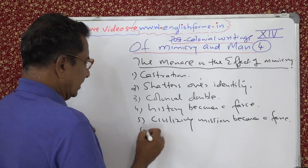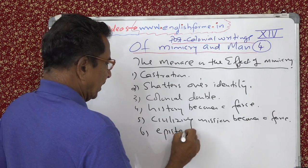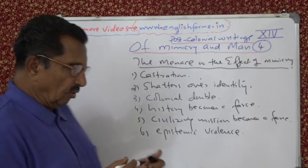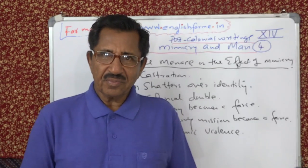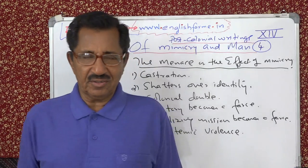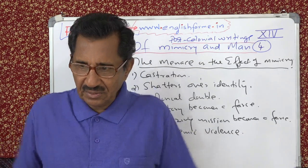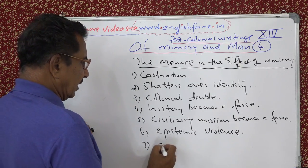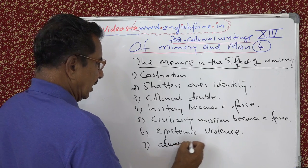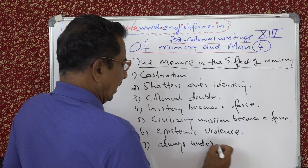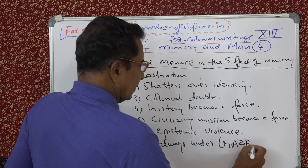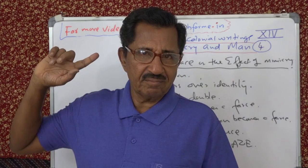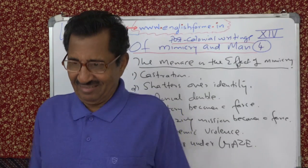Sixth one is epistemic violence. What is epistemic violence? You are doing violence to knowledge — there is nothing sincere about what is presented. Seventh is the colonial subject is always under intimidation, under gaze. If you don't behave properly, you will be beaten up.